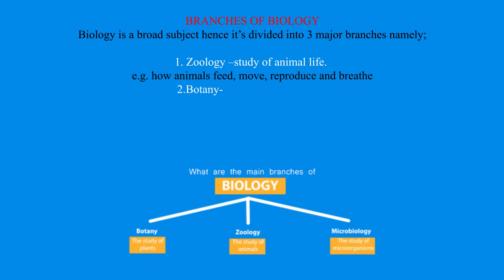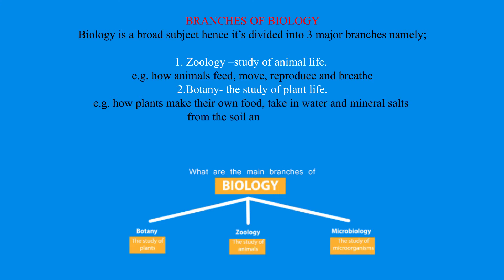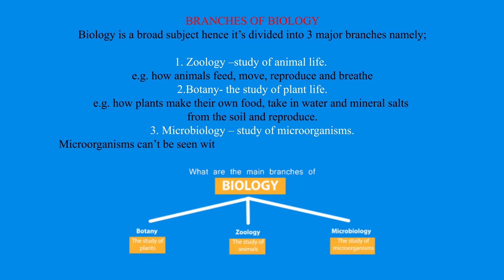The second major branch is Botany, the study of plant life — for example, how plants make their own food, take in water and mineral salts from the soil, and reproduce. The third is Microbiology, the study of microorganisms. Microorganisms can't be seen with the naked eye; they are seen under the electron microscope — for example, viruses and bacteria.